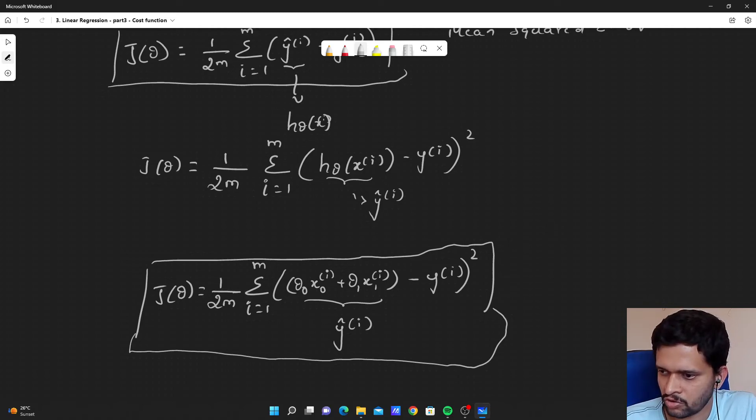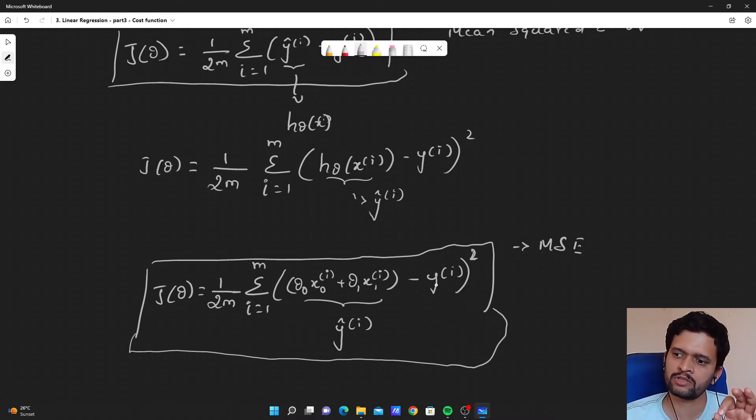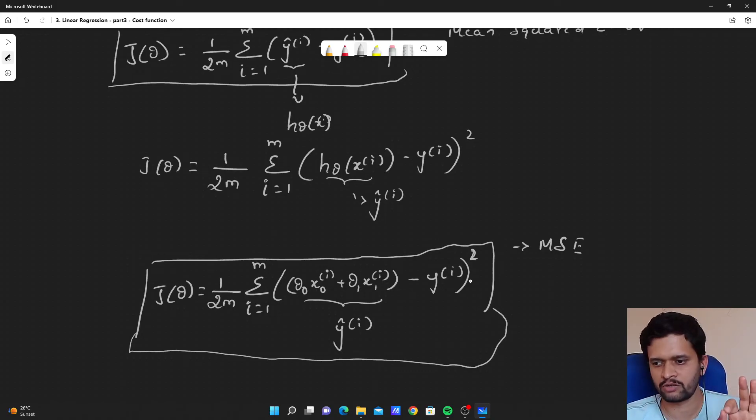This is also called as mean square error. Why are we squaring this here? Since we are subtracting the values, if this value is lesser than this value, it will result in the negative output. In order to avoid the negative outputs, we are squaring them, because positive into positive is positive, negative into negative is positive. In order to get the positive result, we are just squaring the difference here. That is the sole purpose of this.